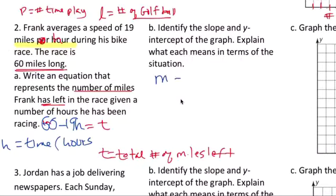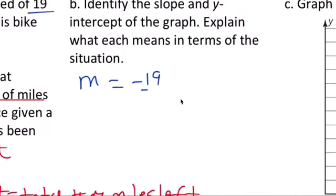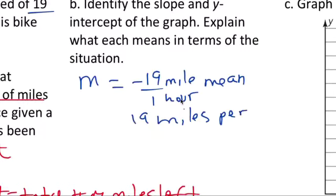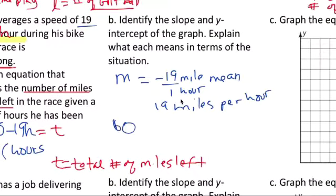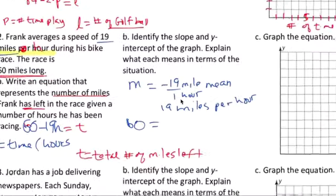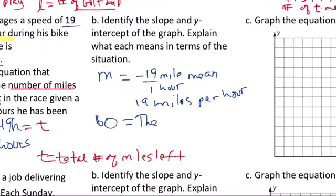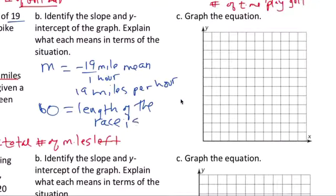Slope, M is negative 19. The speed is 19 miles an hour. 19 miles for every hour. That's what it means. Means 19 miles per hour. The y-intercept is at 60. 60 miles, which is the race. Means the race is 60 miles long. Length of the race.